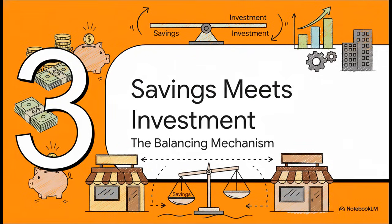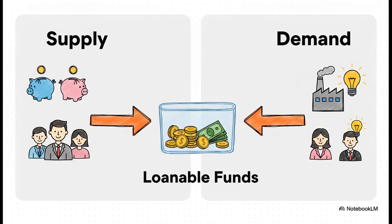So we've just proved in theory that savings has to equal investment. But how does that actually happen in the real world? What's the mechanism that makes sure this balance holds? It turns out there's a specific marketplace where these two forces meet head on, and that place is what economists call the market for loanable funds. Don't let the fancy name fool you — it's a really simple idea.